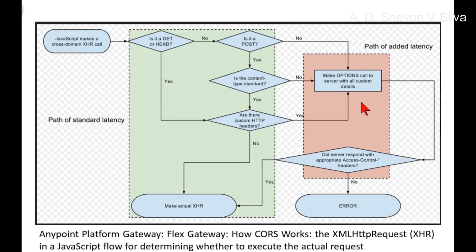If the backend does not accept the origin, the backend server responds to the request without specifying the header access-control-allow-origin. The client then understands the page origin is not allowed and does not execute the actual request.